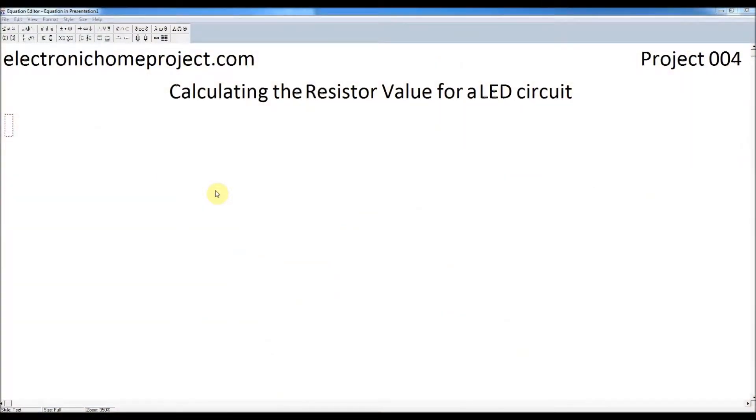Okay, we're going to look a little bit more about how we calculate the resistor value that we use in this LED circuit. So there are basically two equations that govern the relationship between voltage, current, resistance and power.